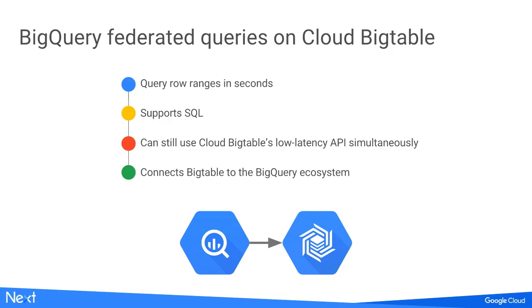The advantages of using this approach: you can query row ranges. If you select start and end row keys in Cloud Bigtable when doing queries through BigQuery, you can get very fast results as long as you're ranging that data. If you do full table scans over terabytes, it's not going to be as fast as BigQuery is, and it's not exactly what this connector is optimized for, but you can do it in batch mode.